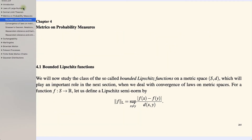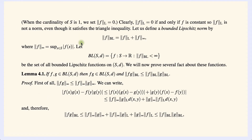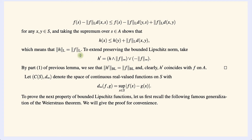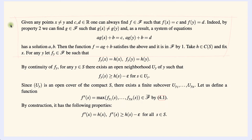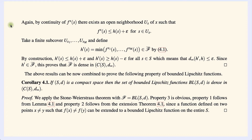Here is the definition of Bounded Lipschitz functions — exactly what the name says: bounded and Lipschitz functions on our metric space. Once we give this definition we will prove a few basic results about them. We will also recall the Stone-Weierstrass theorem and give a proof for convenience, which together with the properties of Bounded Lipschitz functions will allow us to conclude that if our metric space is compact, the set of Bounded Lipschitz functions is dense in all continuous functions with respect to the L-infinity norm.